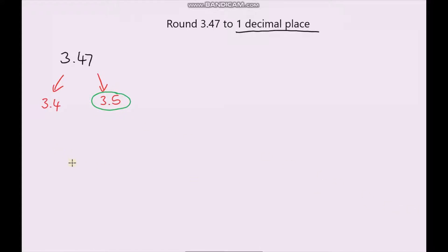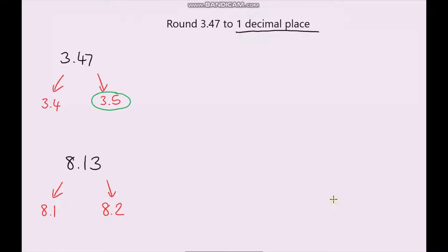Now let's say we've got the number 8.13, and again we're rounding to one decimal place. So we're either going to be rounding it down to 8.1 or rounding it up to 8.2. Again, think about which number it is closer to. 8.13 is definitely closer to 8.1, so in this situation we'll be rounding it down.